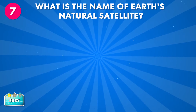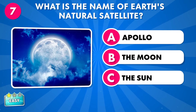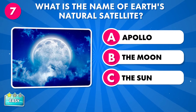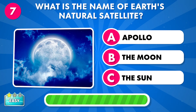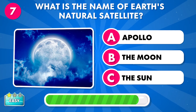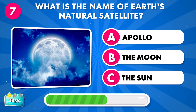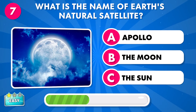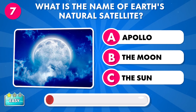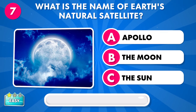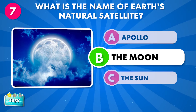What is the name of Earth's natural satellite? A: Apollo, B: the Moon, C: the Sun. It's the Moon.